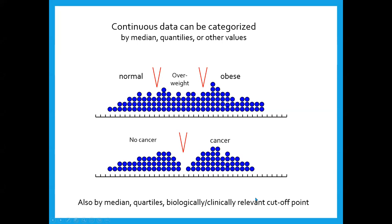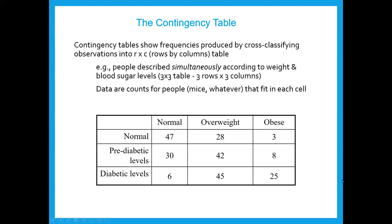You might have a biologically or clinically relevant cutoff point. Here's an extreme example you're rarely going to see in data: all the test values below this cutoff don't have cancer and all the values above do. That makes it very simple. But usually the distributions of test scores are intermingled.